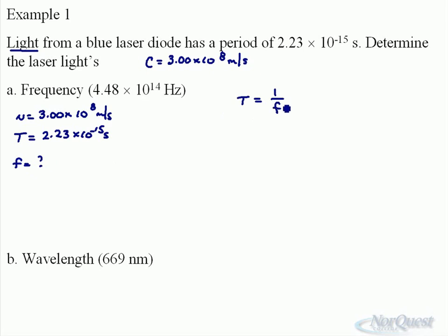And we just have to manipulate that for frequency. This is a quick one to manipulate: f equals 1 over T. Put your numbers in: 1 divided by 2.23 times 10 to the negative 15. Should give us a fairly high frequency.